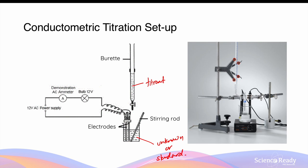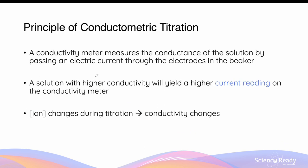We use a beaker because we can insert electrodes into the solution and connect them to an external circuit with an ammeter, allowing us to measure the current passing through the solution. The magnitude of the current is proportional to the conductivity of the solution — when conductivity increases, the detected current increases, and vice versa. As the titrant is added from the burette, the ion concentration in the beaker changes, resulting in a conductivity change.